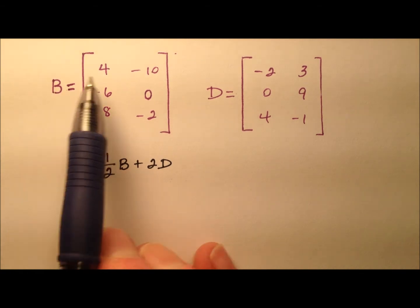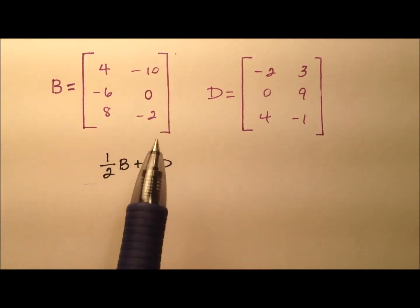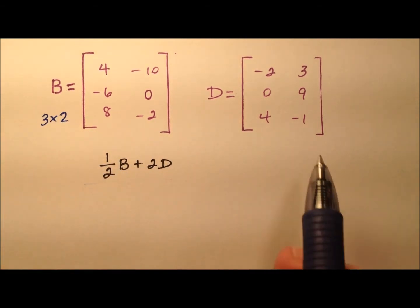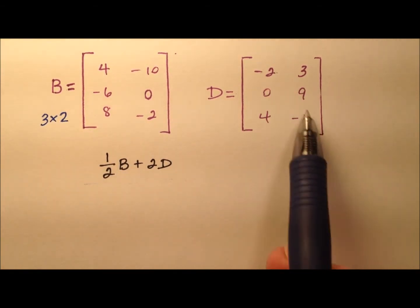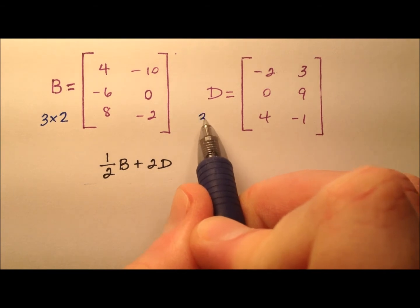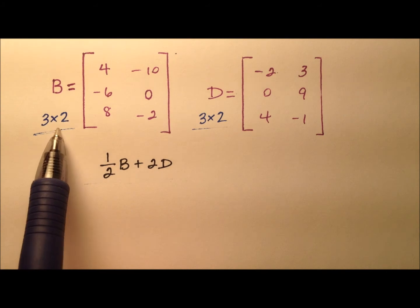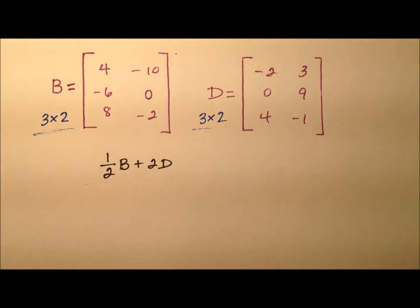So for matrix B here, it looks like we have three rows and two columns, so that guy will be a 3 by 2. And good thing because similarly, we have three rows and two columns for matrix D, so they are both 3 by 2, which means they will have corresponding entries, which means we can do this addition.